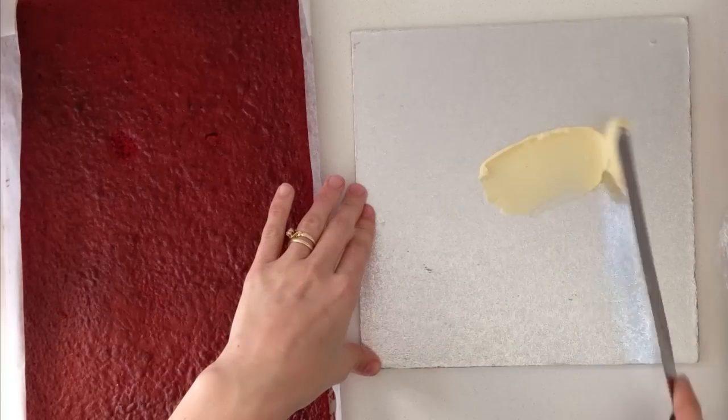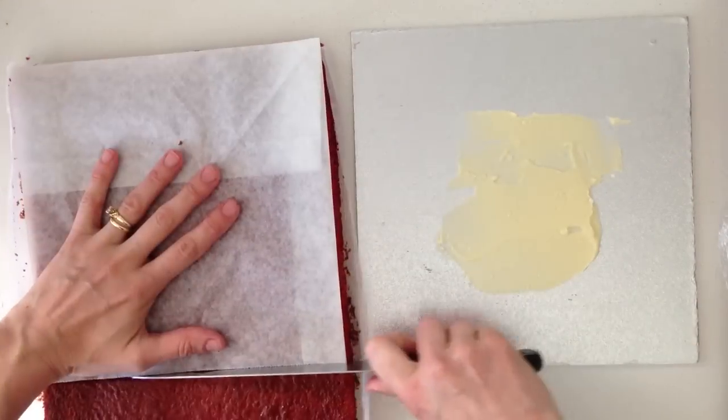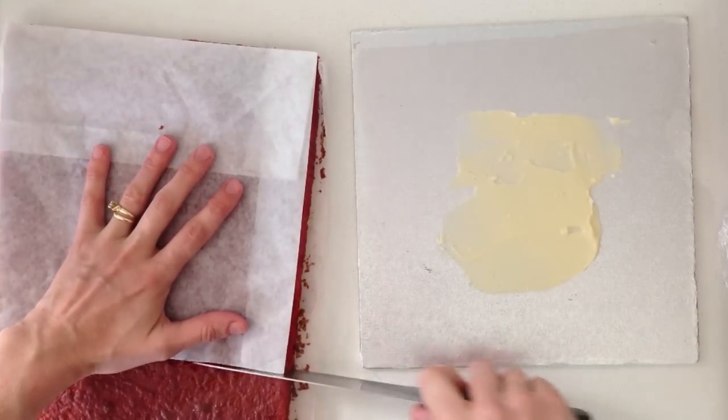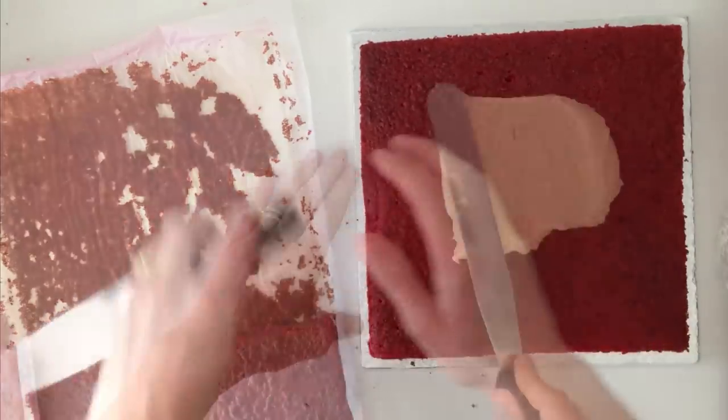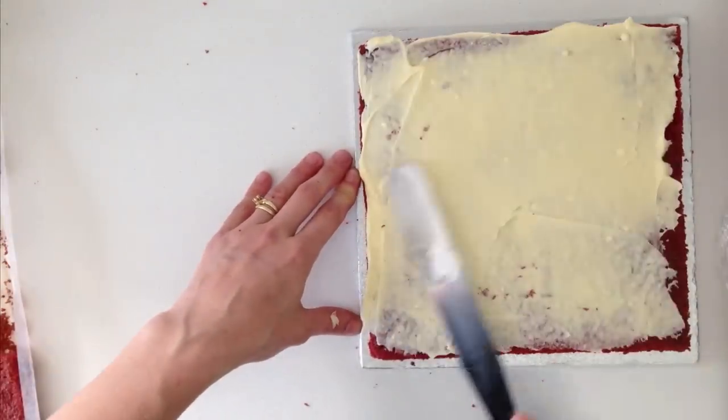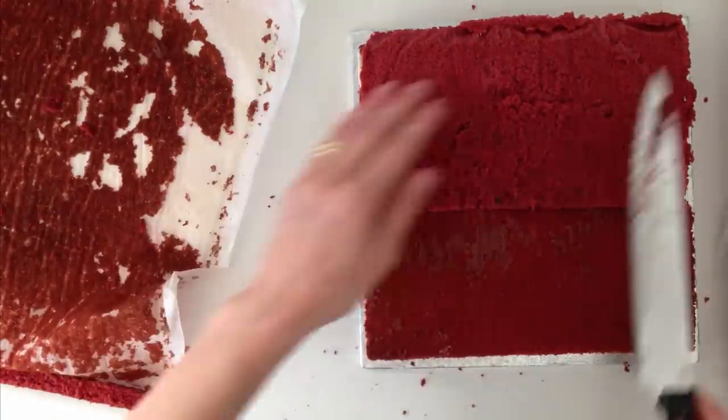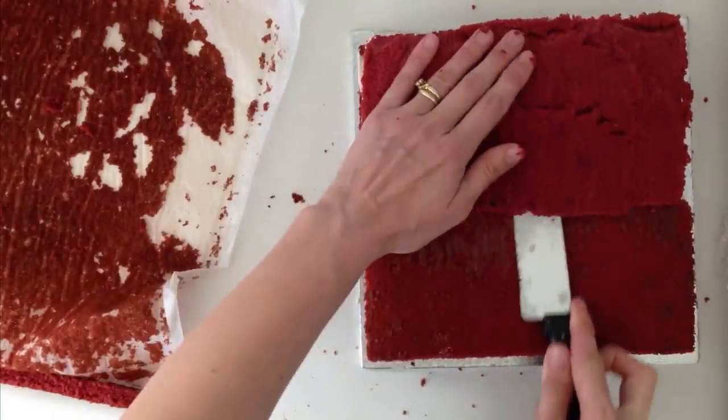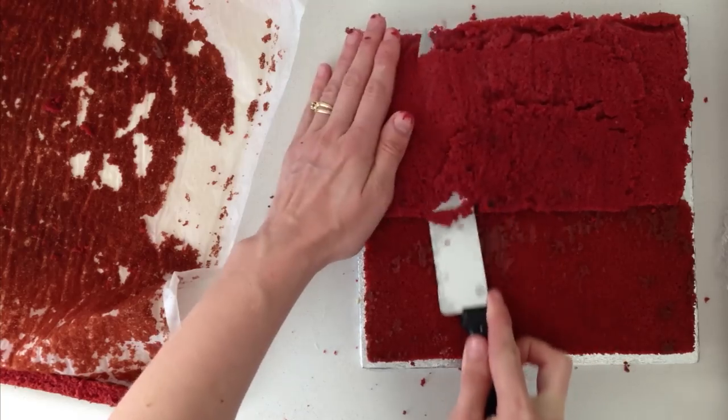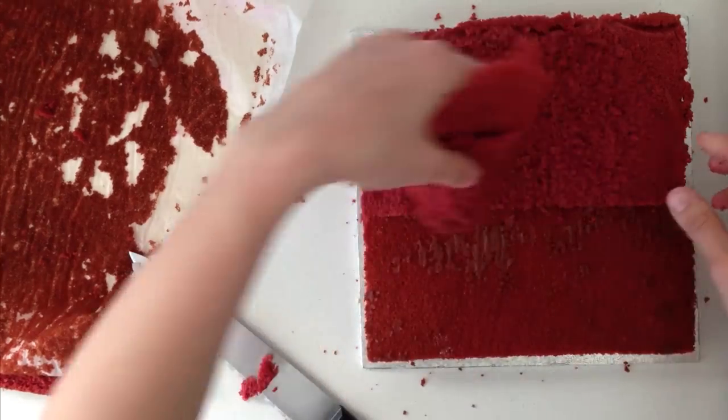Put a smear of cream cheese frosting onto your base and cut a square of cake and add it to the cake board. Add a thin layer of cream cheese frosting. Each time you cut a square, you are left with off-cuts and you can join two of those together to make another square, so you can use those for alternate layers. Use your knife to level them off if they are not quite even.